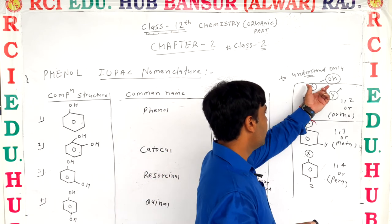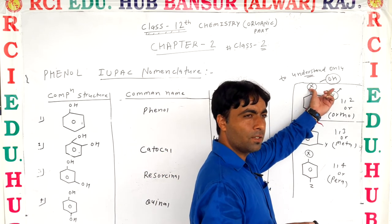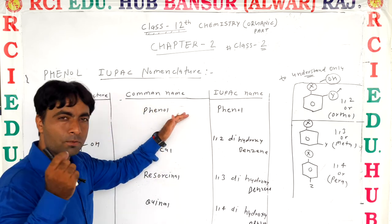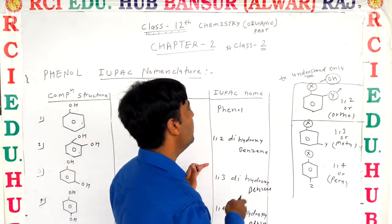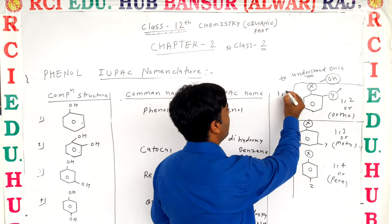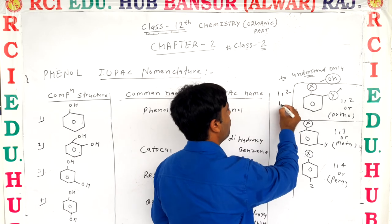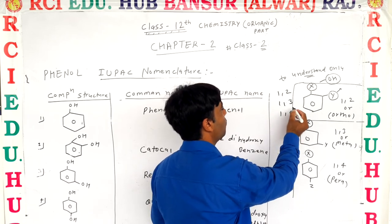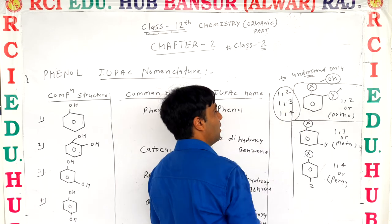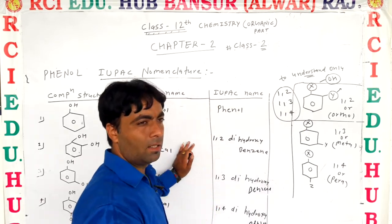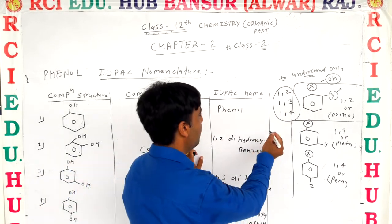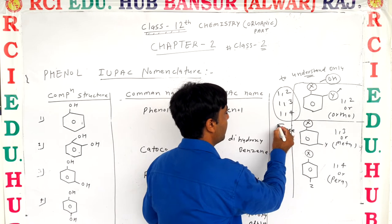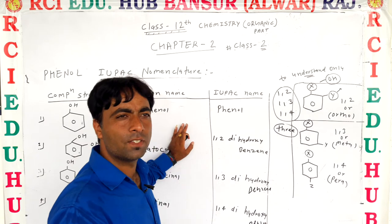According to position, you can change the numbering according to the number of substituents — it may be 1,2 or 1,3 or also 1,4. But if there are three substituents, then their name also changes.